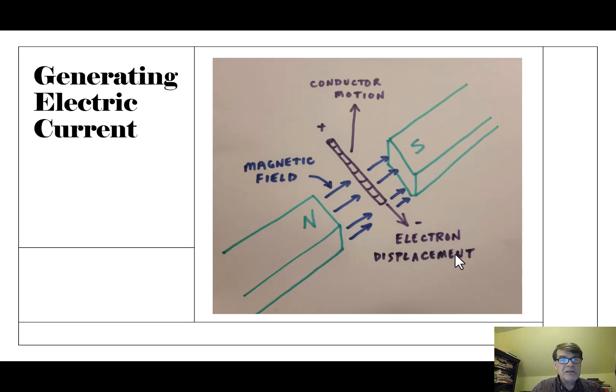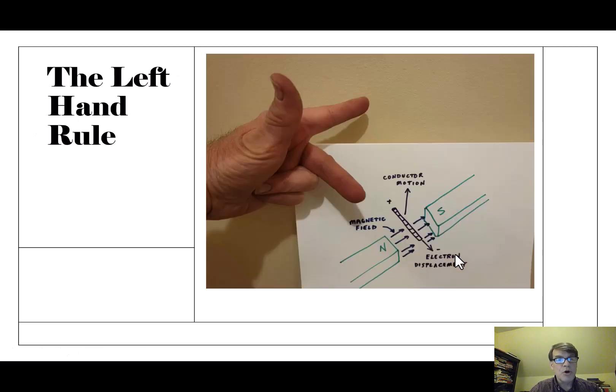So this gives rise to what's sometimes called the left-hand rule, which, surprisingly, involves your left hand. And so to do this left-hand rule, your index finger, make like a gun, your index finger should point in the direction of the magnetic field. So you can see that my finger, my index finger, is pointing in the direction that the magnetic field is going.